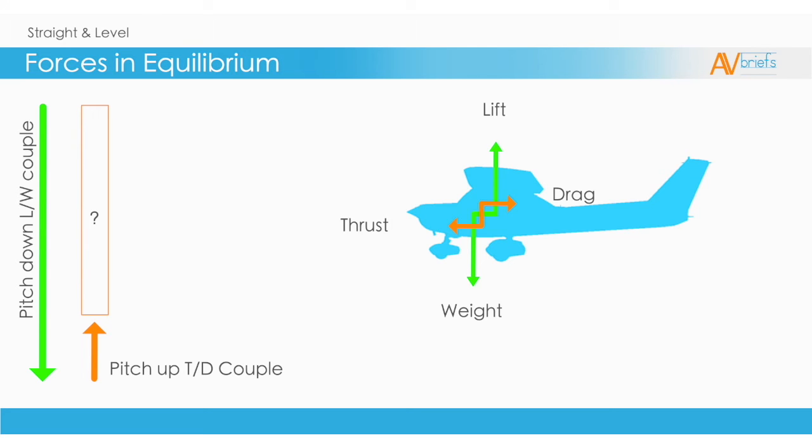I mentioned before that there are things done to counteract these couples. As you can see, this airplane in flight would continue to pitch down due to the much higher pitch down couple. As an important note, you can see that all four of these forces are set up to act around a central point. Going back to these two couples, we still need to find how we are going to compensate for the lower thrust and drag couple. By definition we need equilibrium to make an airplane fly straight and level.